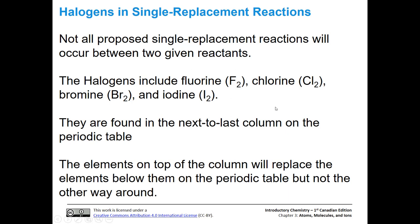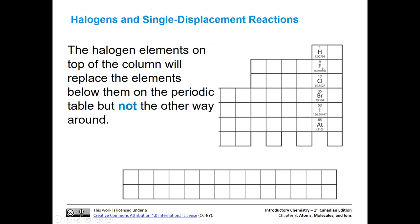Here on the periodic table we can see fluorine, chlorine, bromine, iodine. Fluorine will replace anything below it. Iodine won't replace anything. So fluorine will replace chlorine, bromine, and iodine. Chlorine will not replace fluorine, but it will replace bromine and iodine. Bromine will not replace chlorine or fluorine, but it will replace iodine. Just get used to thinking about that.